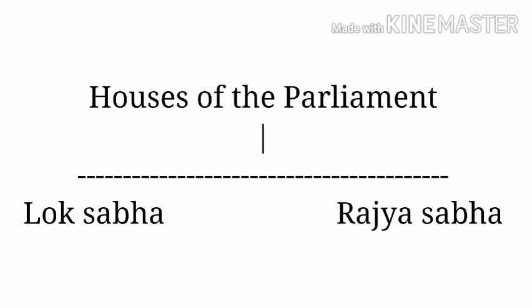There are a maximum of 552 members in Lok Sabha. Some seats are reserved for Scheduled Castes and Scheduled Tribes. If there is no representative from the Anglo-Indian community, the President appoints two members from that community.